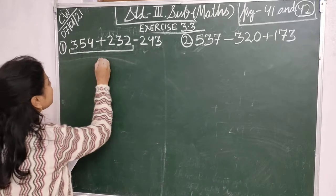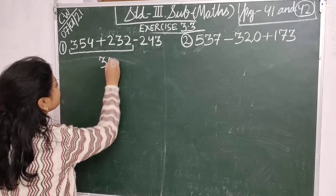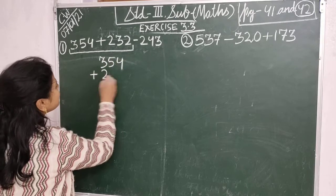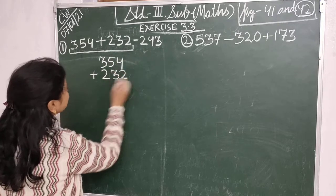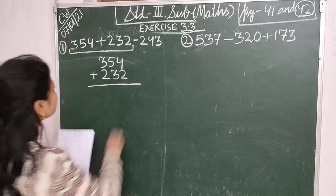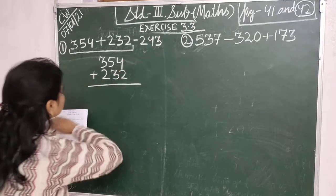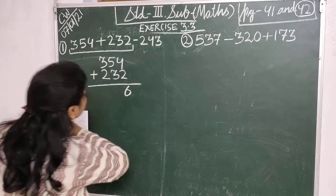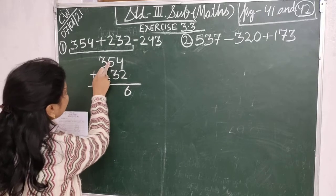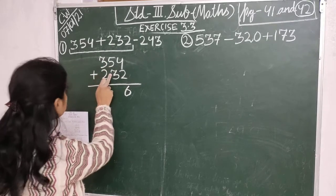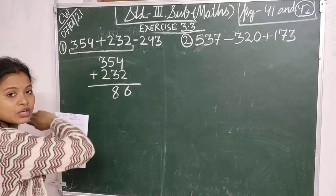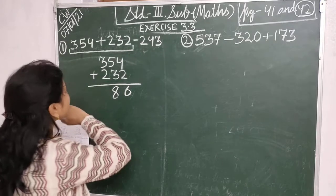So the first number is 354 plus 232. Let's start the addition. Children, 4 plus 2 is 6, so I will write here 6. Then 5 plus 3 is 8, so I will write here 8. I know you can do this addition — otherwise you can do this addition with the help of your fingers.